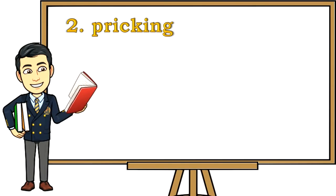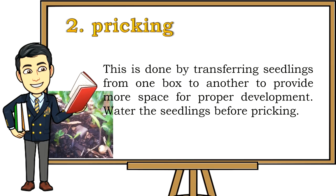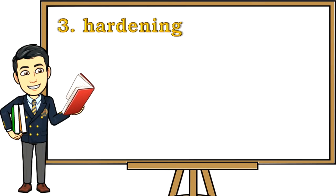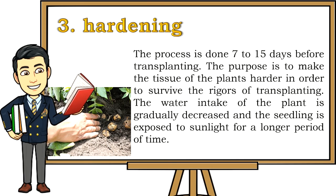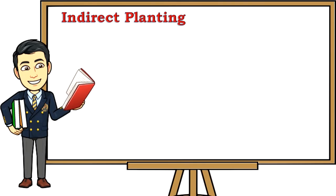Second, pricking: this is done by transferring seedlings from one box to another to provide more space for proper development. Water the seedlings before pricking. Third, hardening: this process is done 7 to 15 days before transplanting. The purpose is to make the tissue of the plants harder in order to survive the rigors of transplanting. Water intake is gradually decreased and the seedling is exposed to sunlight for a longer period of time.